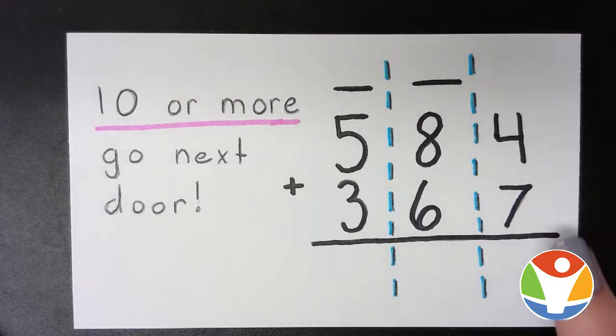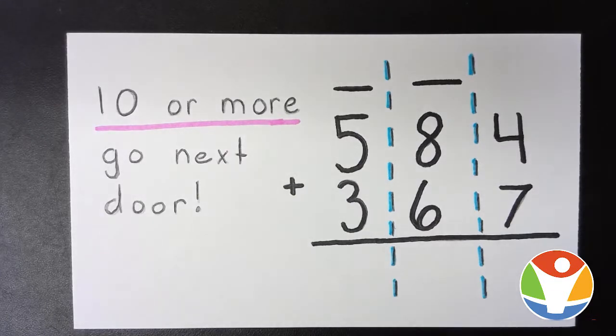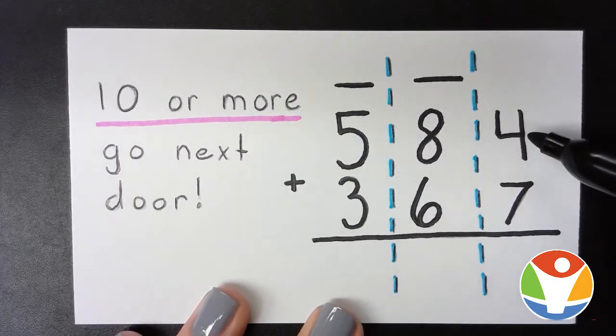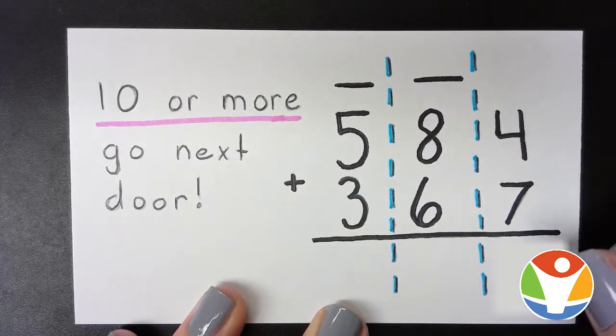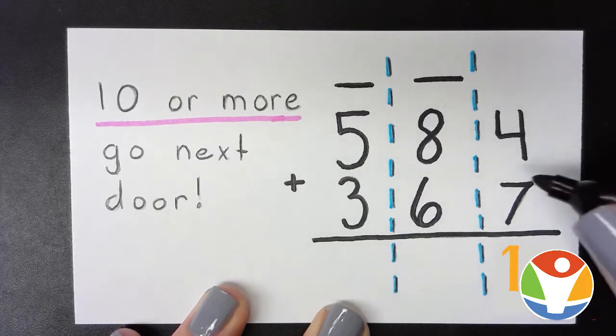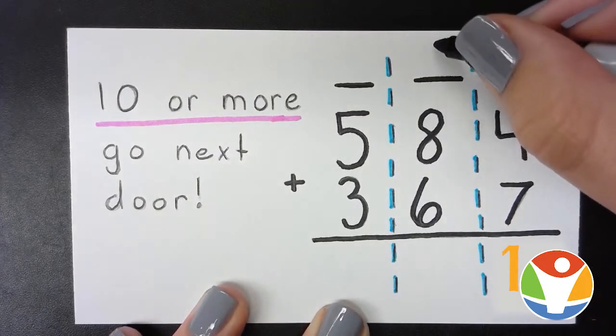But what happens when these place values add up to 10 or more? Well, we just go next door. So seven plus four will give us 11, so we put the ones place down here and move the other one next door.